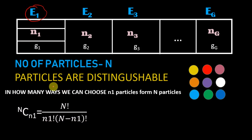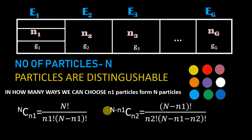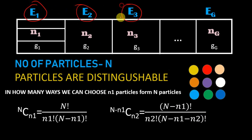Now this box is filled. We have n minus n1 particles remaining. The question is: in how many ways can we choose n2 particles from n minus n1 particles? That is (n minus n1) choose n2, which equals (n minus n1) factorial divided by n2 factorial times (n minus n1 minus n2) factorial. We do this for each energy level up to Eg, and then multiply all those together to get the total number of ways these n particles can arrange themselves in these energy levels, ignoring degeneracy.